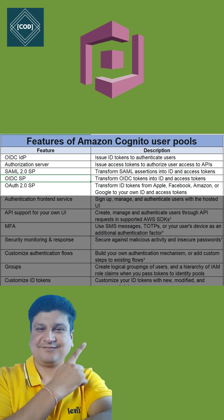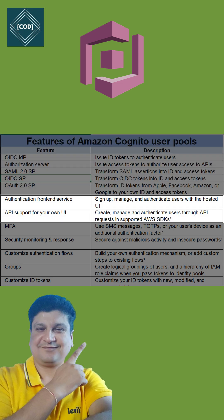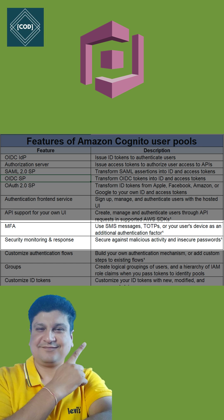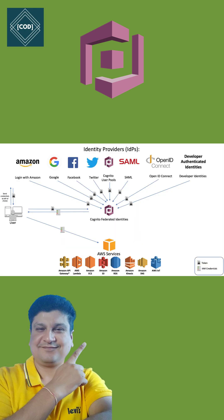Some of the features of Amazon Cognito User Pool are as follows: first, Cognito User Pool can issue an ID token to authenticate users; second, issue an access token to authorize user access to APIs; third, sign up, manage, and authenticate users with the hosted UI; fourth, set up multi-factor authentication for your users; fifth, secure against malicious activity and insecure passwords.